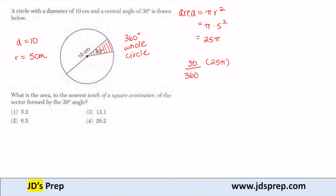If we substitute that into our calculators, we can approximate the area of the sector to be about 6.5, which is option 2.